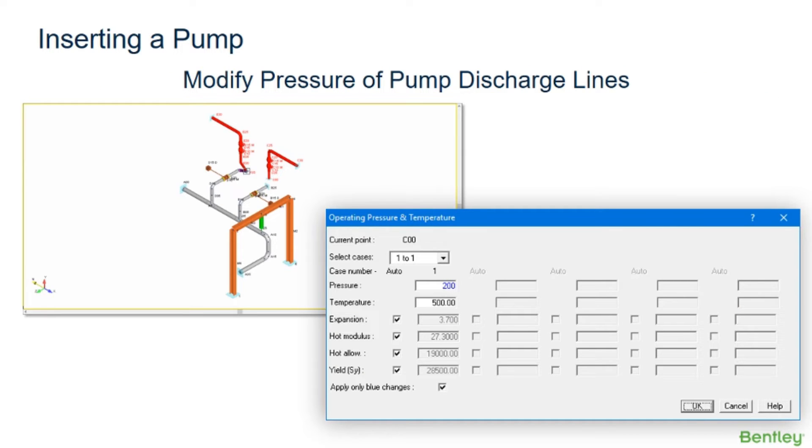Next, we will modify the pressure of our pump discharge lines. The operating pressure and temperature dialog box enables the user to define specific temperature and pressure data for each operating load condition, beginning at the current point displayed in the dialog, or over a range of selected points.